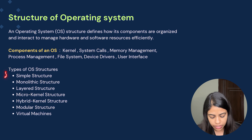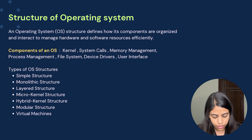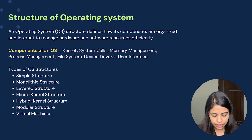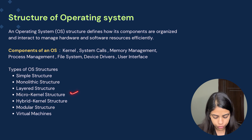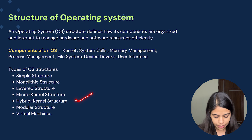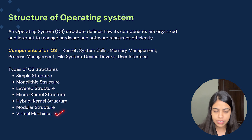Now what are the types of operating system structure? The first one is simple structure. Second is monolithic. Third is layered. Fourth is microkernel. Fifth is hybrid kernel. Sixth is modular, and the seventh one is virtual machines.